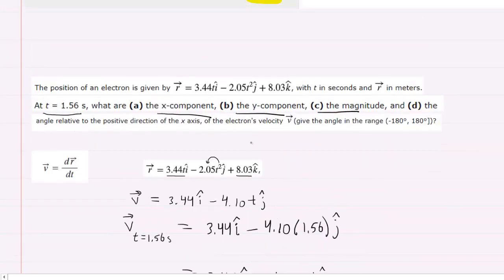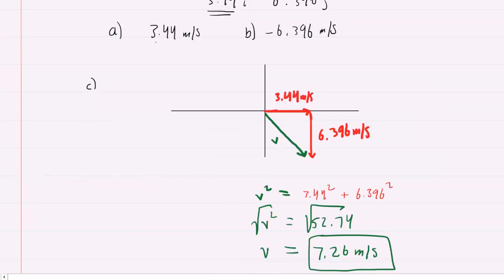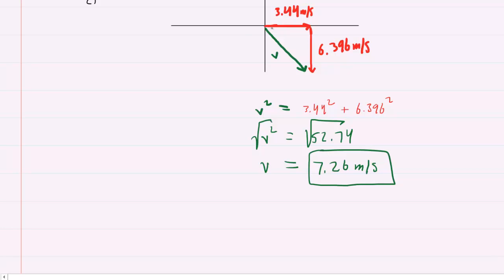Finally, in part d, we are asked to find the angle relative to the positive direction of the x-axis. And we can use our diagram to find that as well. If we go back to the diagram, basically they're looking for this angle right here, theta.